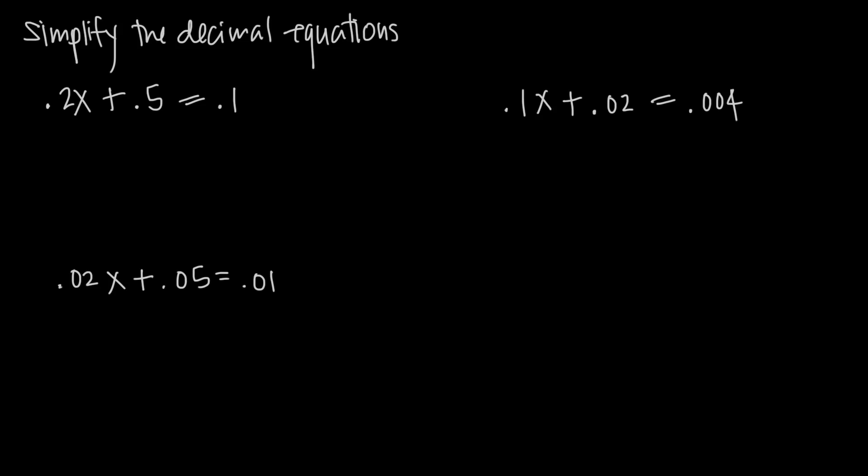In this video we're talking about simplifying decimal equations, and I've got a couple examples here of equations where we have decimals. So in this first one, we have .2x plus .5 is equal to .1. So we have three decimals, and sometimes you'll have a mix of whole numbers and decimals. Sometimes all of your values here will be decimals. It doesn't matter. The process for simplifying these types of equations is always going to be the same.